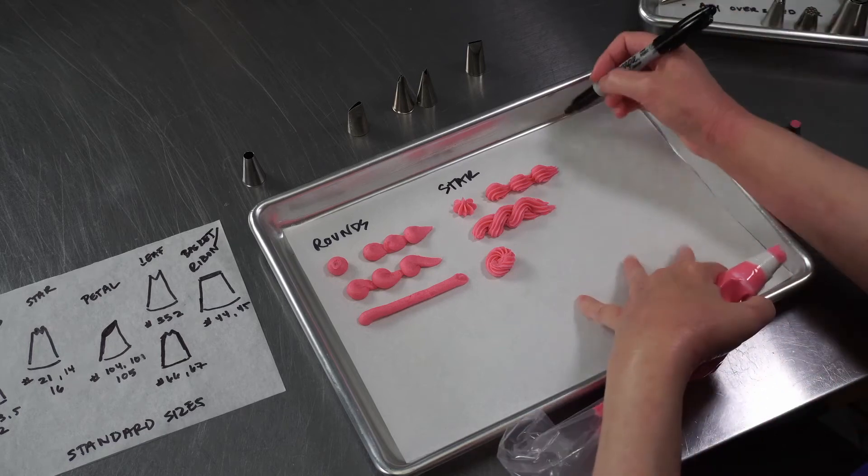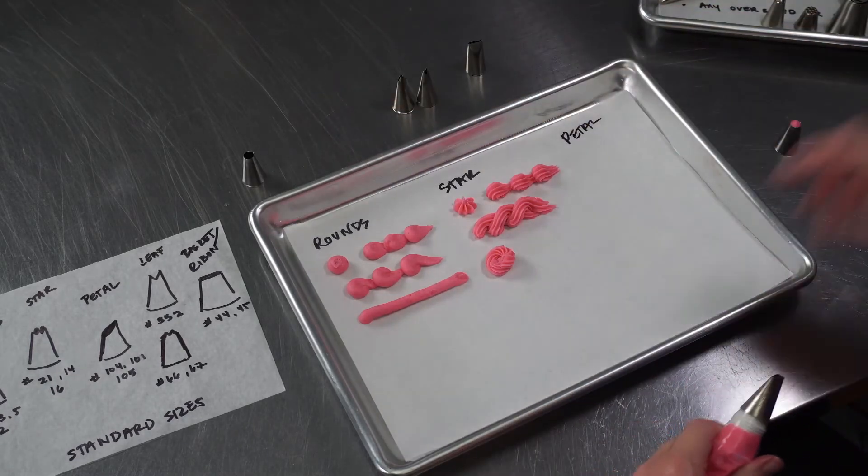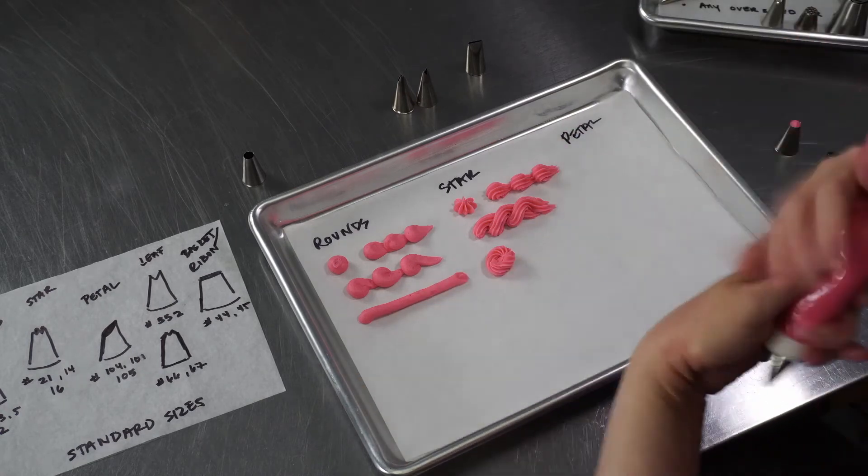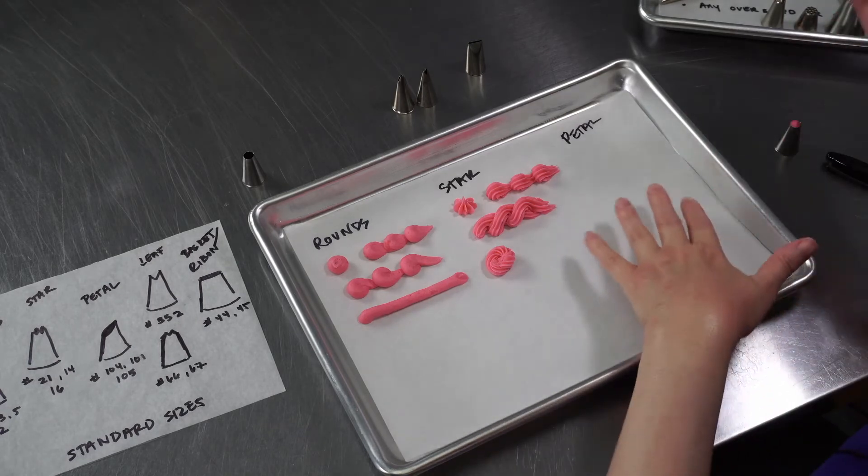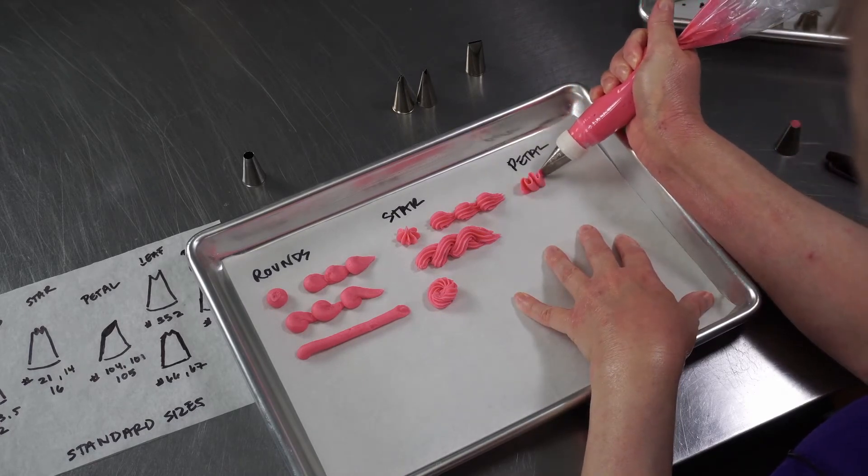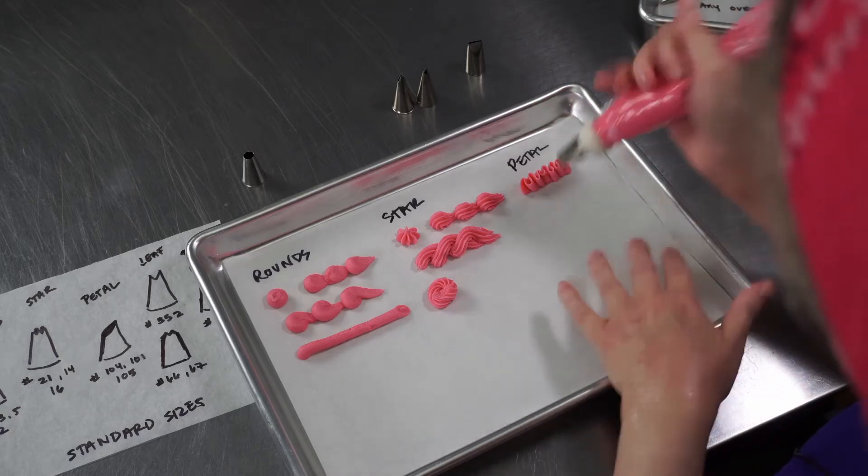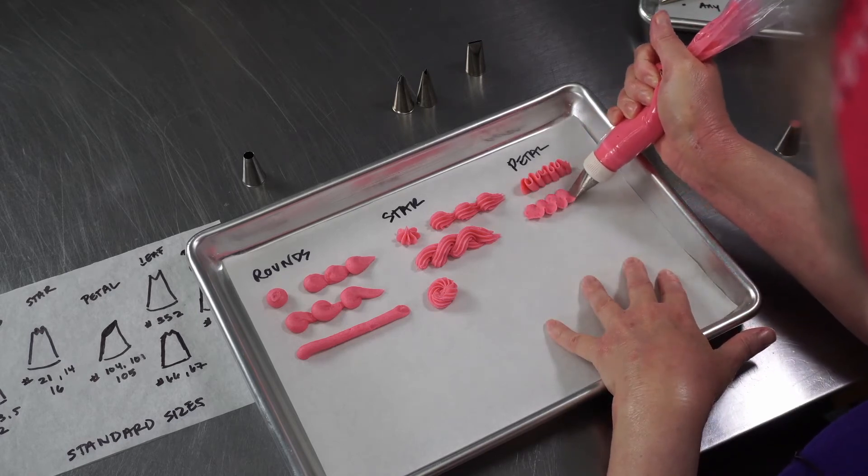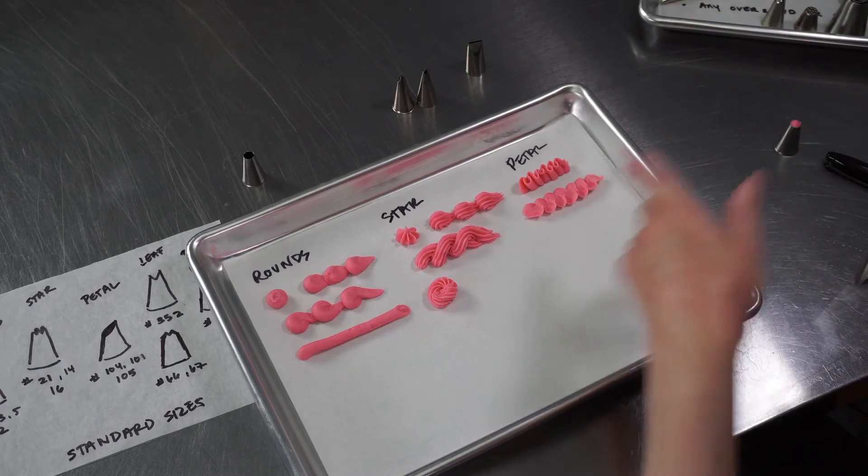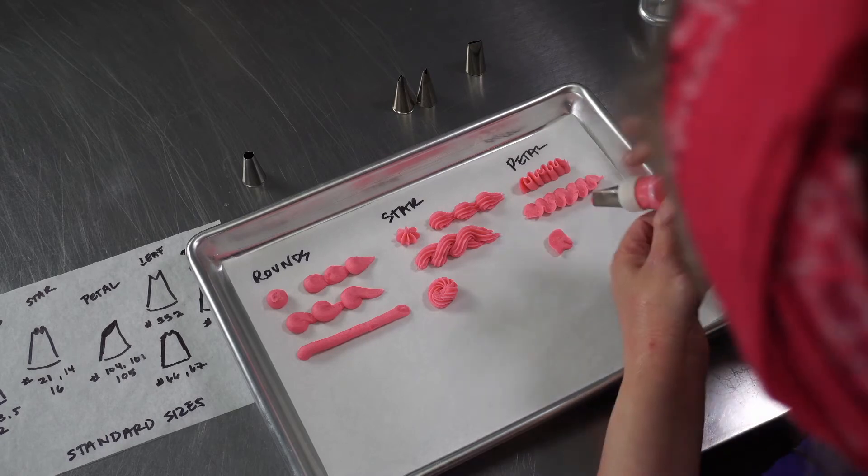Our petal tips get most of their use on the flower nail and can get used to pipe actual flowers. But you can also use them to do ruffles and various other things. So there's a variety of ruffles, ridges, and things you can do with your petal tips in addition to creating actual petals that would make up flowers.